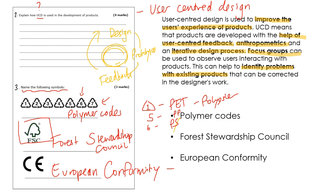Be careful because you could be shown different codes. There's also the kitemark with BSI, and another one with a lion — called the lion mark — which relates to toys. Make sure you look at some of those symbols because they could catch you out if you're not careful.